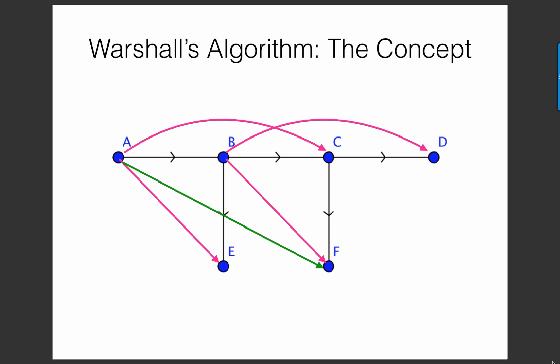Likewise, in the original, there's a third level connection from A to D. That's a path of three edges. But now, this is a second level connection, thanks to the edge that we added from A to C in the first iteration. So since this is now a second level connection, we will add an edge from A to D.